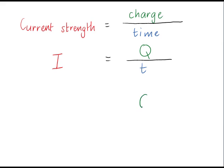What units do we measure current strength in? The unit of charge is Coulombs, which we shorten as a C. The standard international, or SI, unit of time is seconds, which we shorten to S.